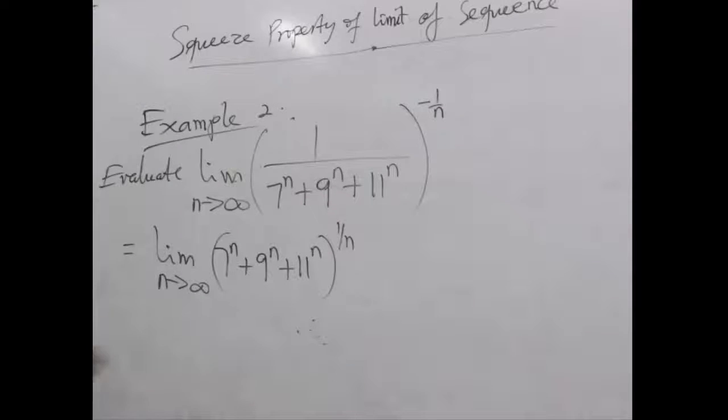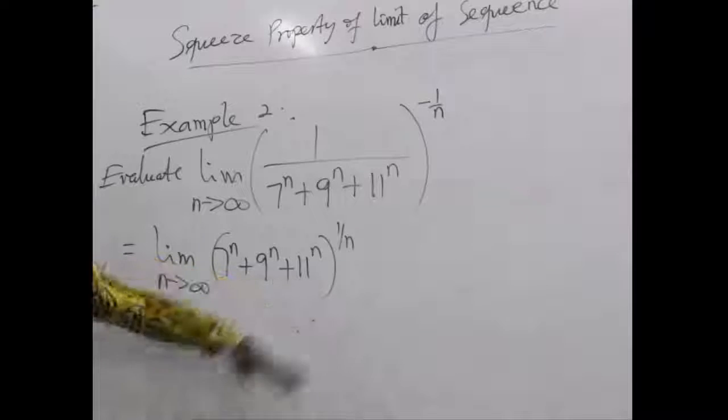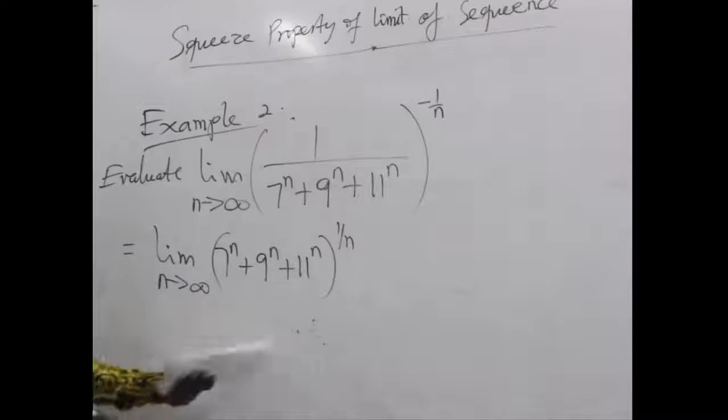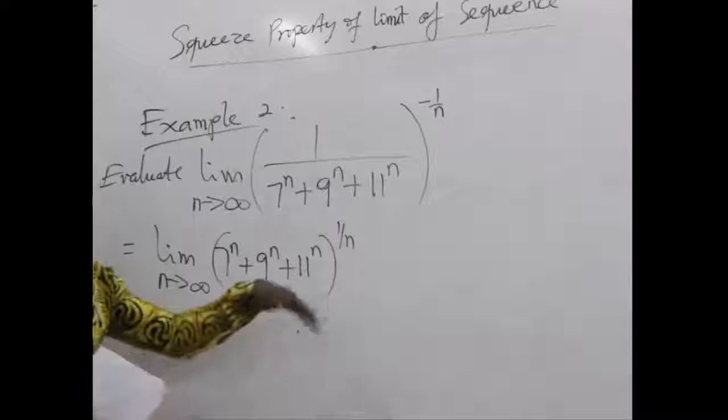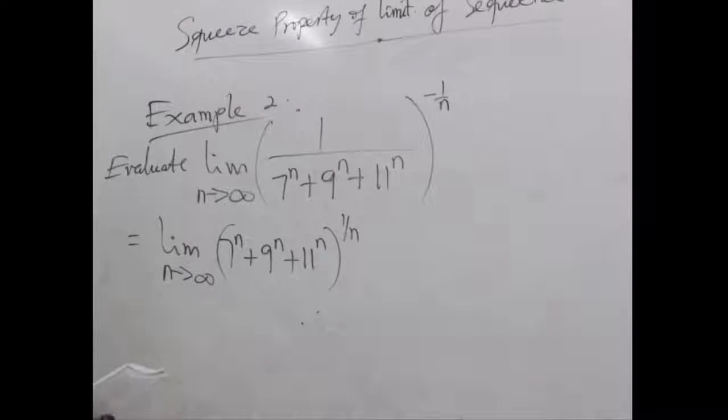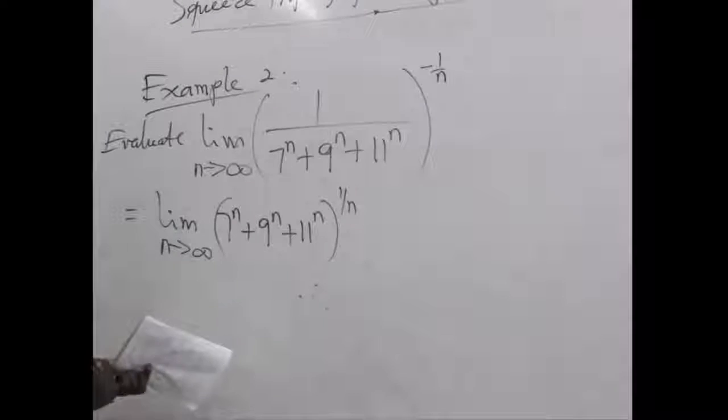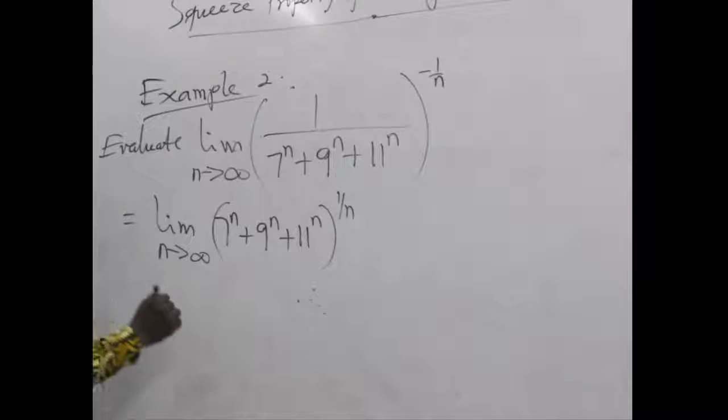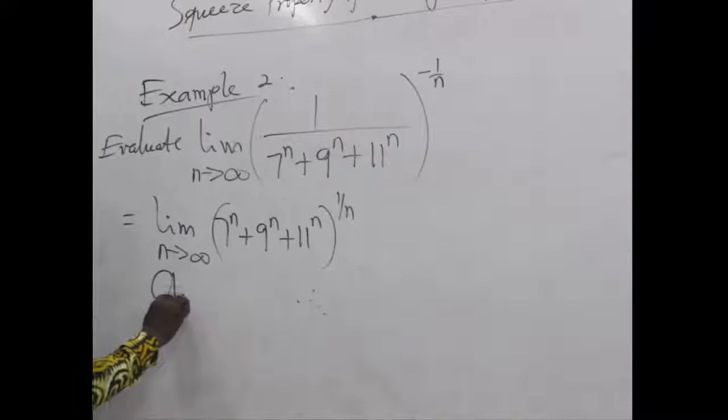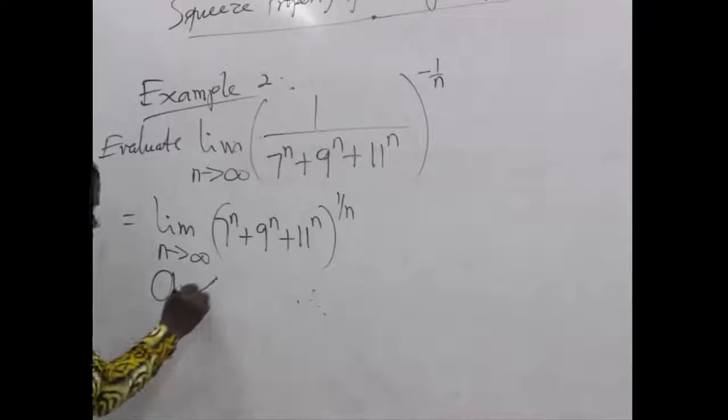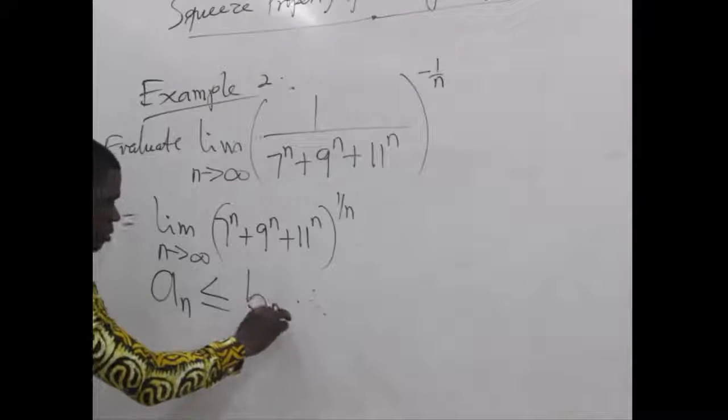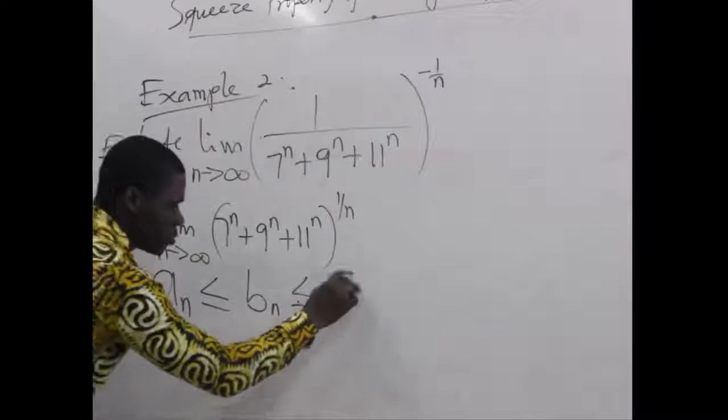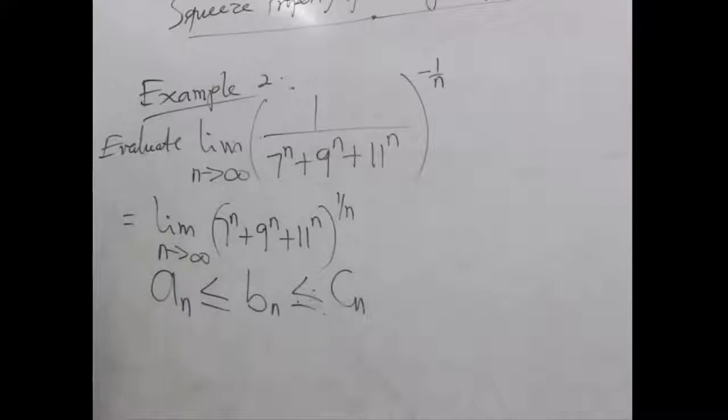Let's go ahead and use the squeeze property to evaluate this. Using the squeeze property, you need to actually remember under what condition that particular property is applicable. That property is used when we have a certain sequence a_n that is less than or equal to another sequence b_n, less than or equal to another sequence c_n.